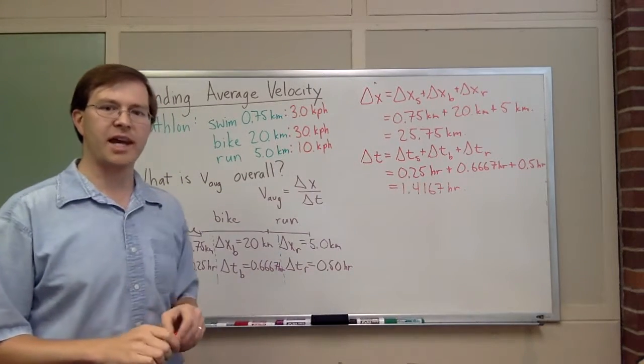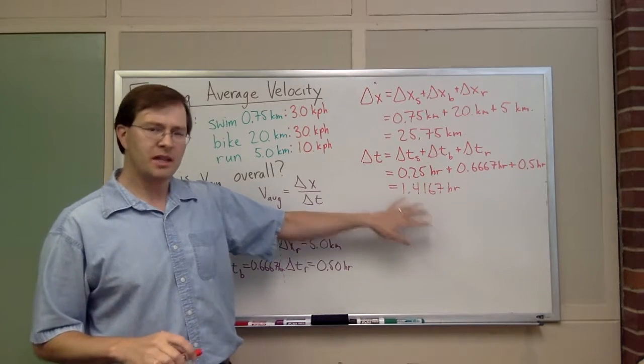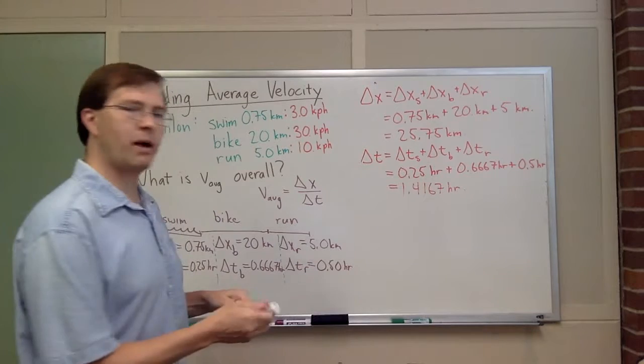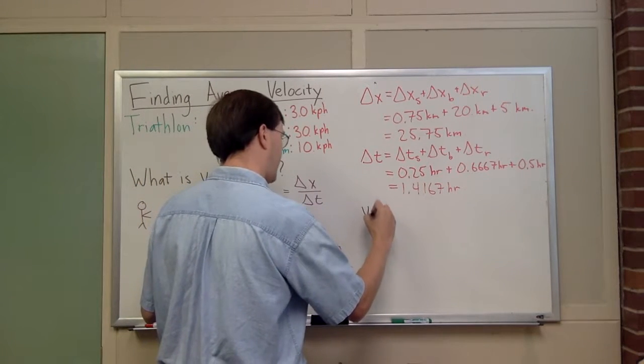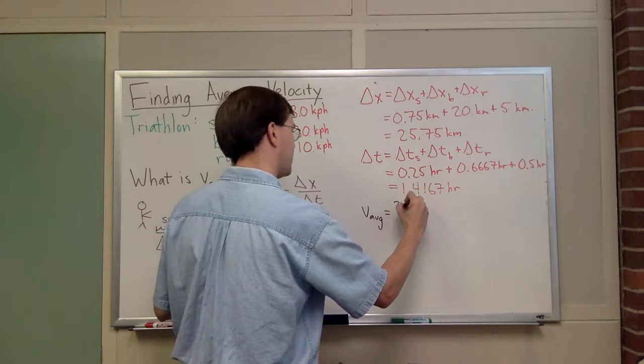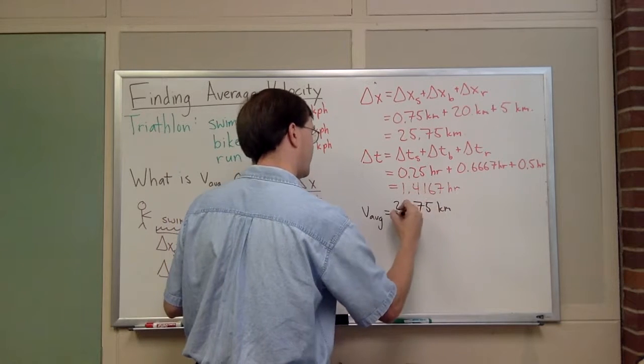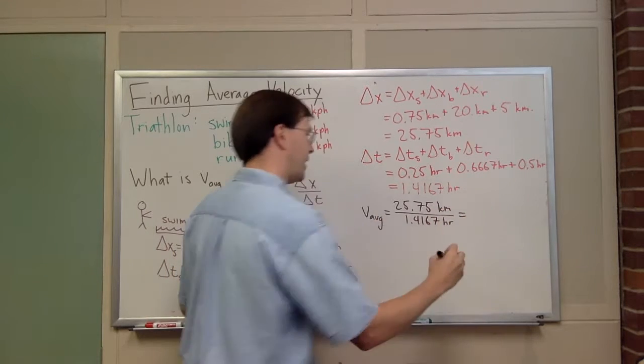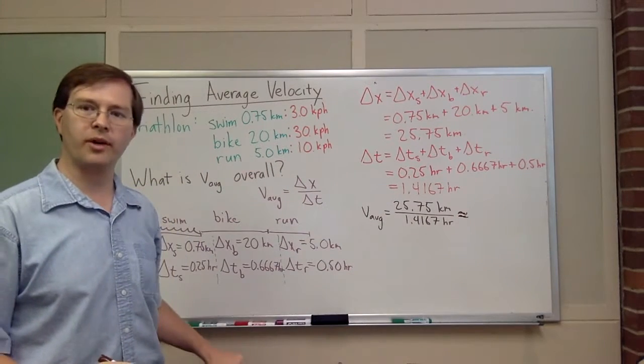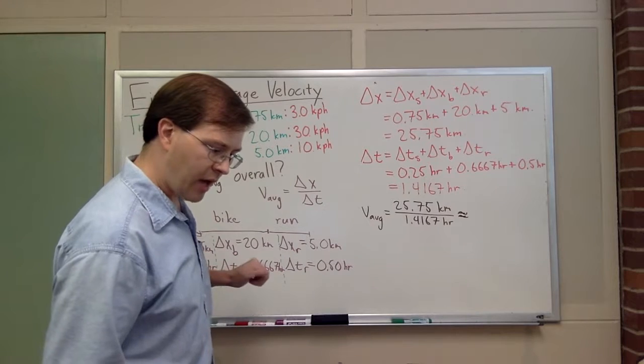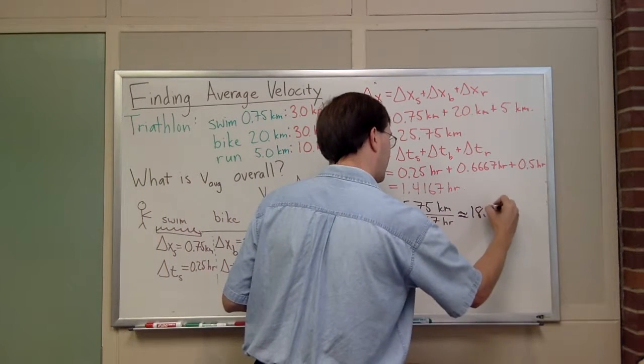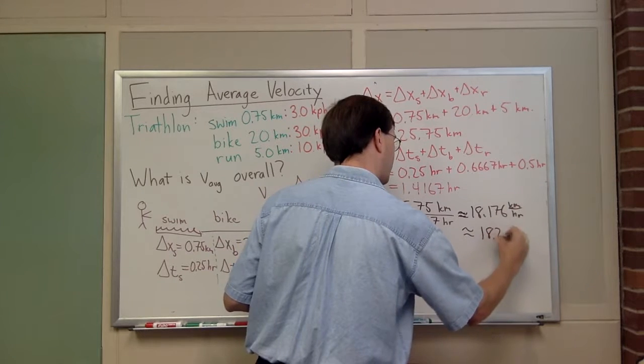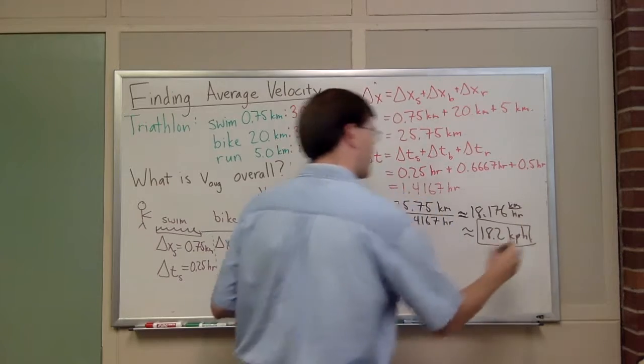That's my delta x, that's my delta t. I've tried to keep extra decimal places here because I don't want to round until my very last step. Now we're to the very last step. I can say that v average, my average velocity that I'm looking for, v average is going to be equal to delta x, 25.75 kilometers, divided by delta t, 1.4167 hours. When I do that calculation, I come up with 18.176 kilometers per hour, which I can round off to about 18.2 kilometers per hour.